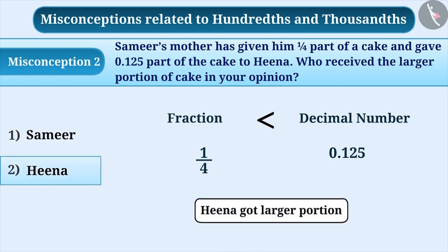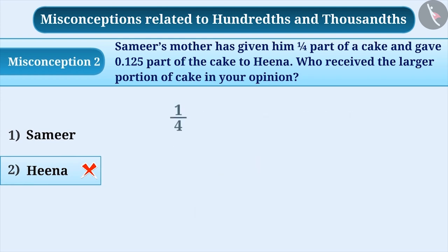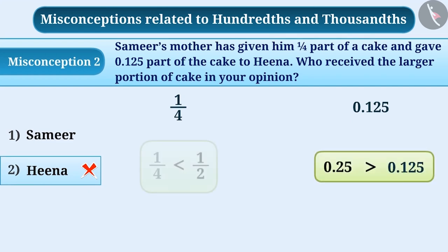With this understanding, incorrect answer option 2 is chosen. In order to compare one-fourth and 0.125, we need to represent both the numbers either in decimal form or in fractional form. Let's represent them in decimal form.